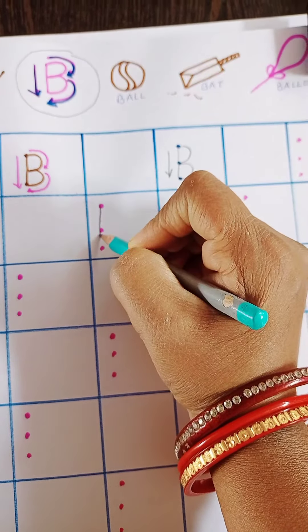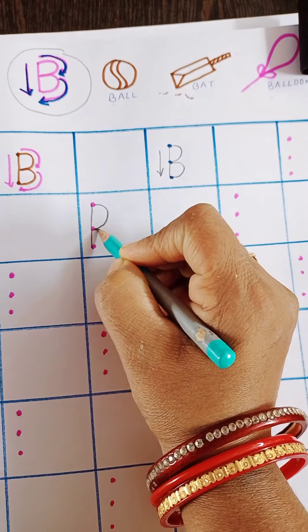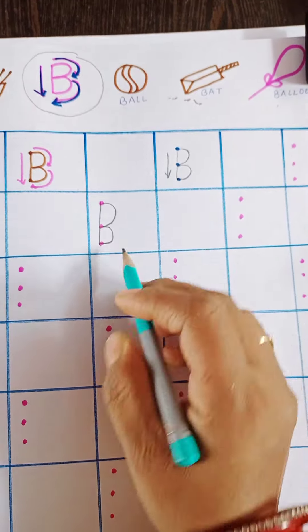Again, straight line. From first dot to second dot, one kar. And from second dot to third dot, one kar. This is B.